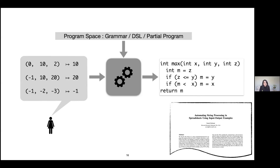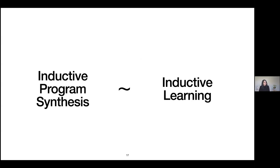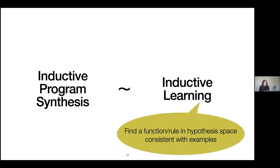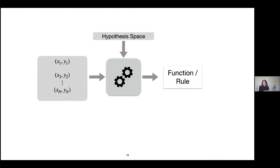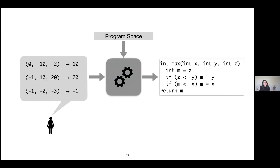Before moving on, I want to clarify that inductive synthesis can mean many things, but in this talk when I say inductive program synthesis I'm referring to this search-based programming-by-example variant. Inductive program synthesis sounds very similar to inductive learning, where the goal is to learn a general function or rule from specific input-output pairs in a hypothesis space. It is easy to see how inductive program synthesis is simply an instance of inductive learning where the hypothesis space is replaced by the program space and the learned function is a structured program.